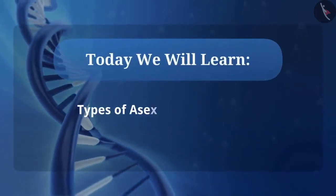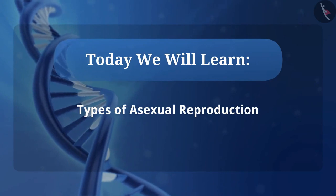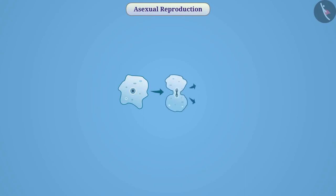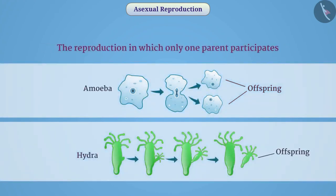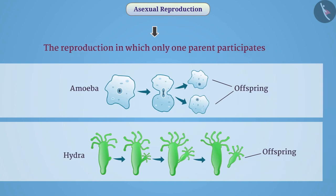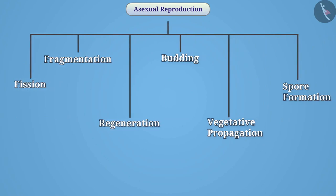We will learn about the types of asexual reproduction. Some organisms produce the next generation from a single parent, like amoeba, hydra, etc. The reproduction in which only one parent participates is called asexual reproduction. A variety of asexual reproduction is found in different organisms, and on that basis, there are different types of asexual reproduction.